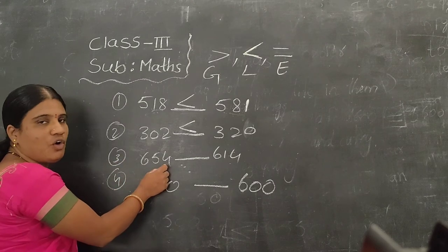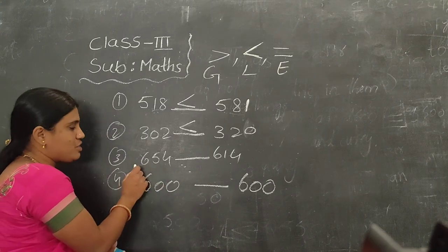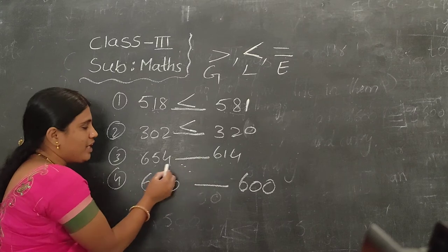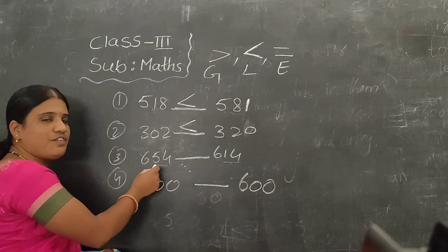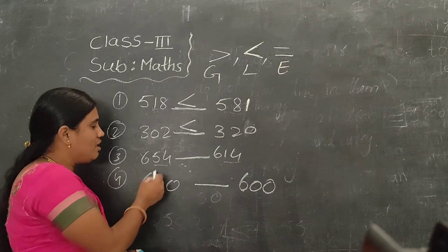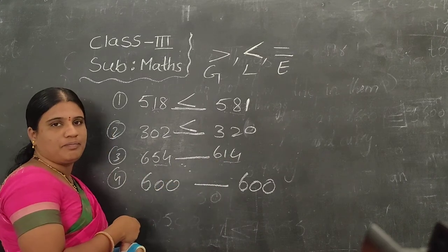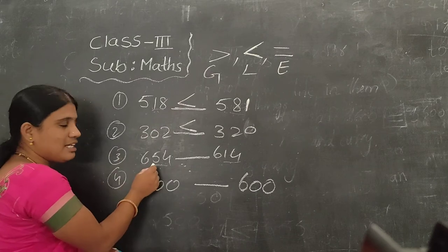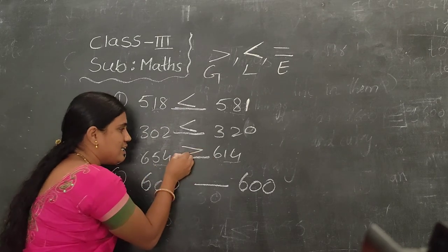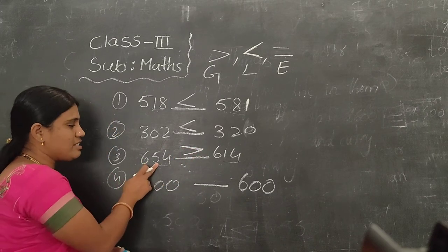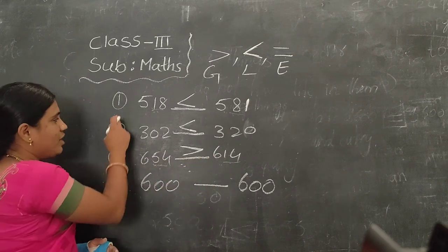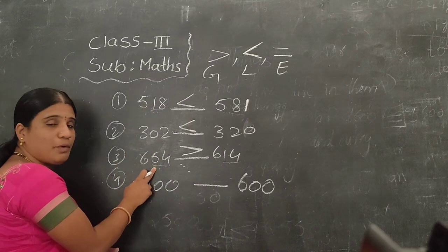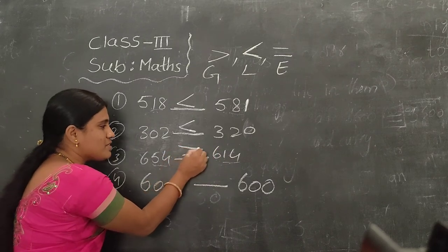See the third one: 654 and 614. These two are both 600 numbers. But here we have 54 and here we have 14. So the first number is bigger than the second number. Because the first number is bigger than the second number, here we have to use the greater than symbol.